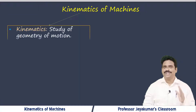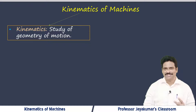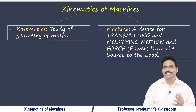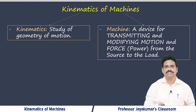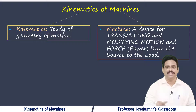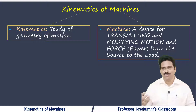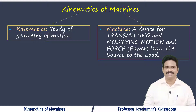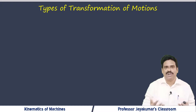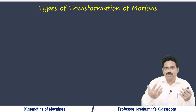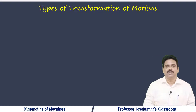Kinematics of machines has two terms: kinematics and machines. As we have already discussed, kinematics is the geometry of motion. Let us now define the term machine. A machine is a device for transmitting and transforming both motion and force from the source or input to the load, output, or application. So a machine is required to transform one form of available input motion into the desired type of output motion.